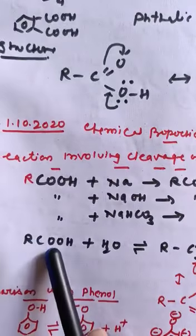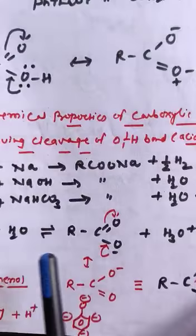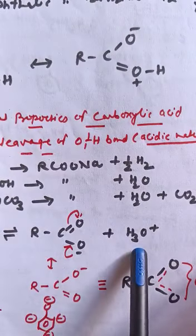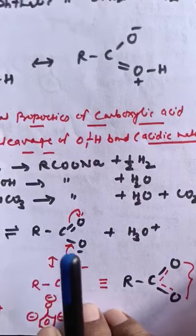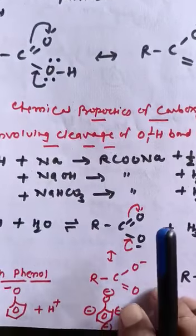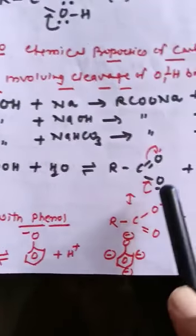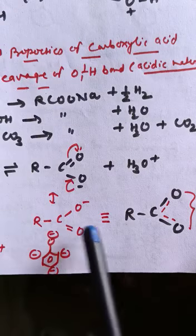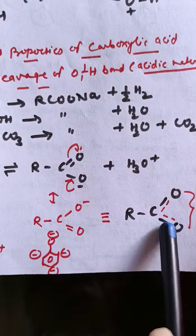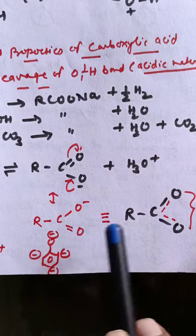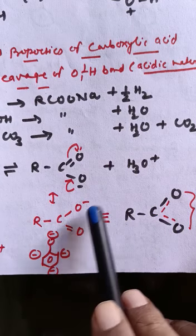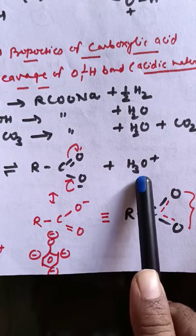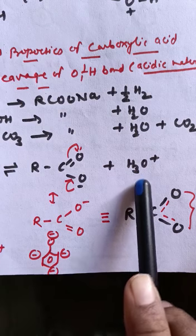When carboxylic acid dissolves in water, it gives carboxylate anion and hydronium ion, which confirm the acidic nature of carboxylic acid. The carboxylate anion is stable by following resonating structure. Due to these resonating structures, the carboxylate anion is stable, so it can easily release hydronium ion or hydrogen ion and shows the acidic nature. Thank you very much.